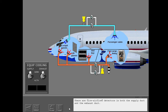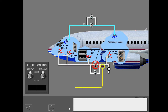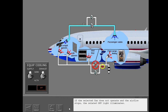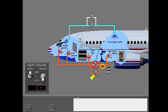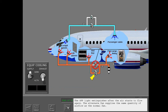There are low airflow detectors in both the supply duct and exhaust duct. If the selected fan does not operate and the airflow stops, the related off light illuminates. When the off light illuminates, you select the related alternate fan. The off light extinguishes after the air starts to flow again, and the alternate fan supplies the same quantity of airflow as the normal fan.